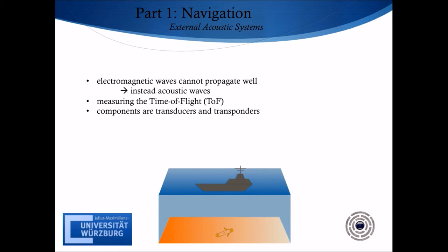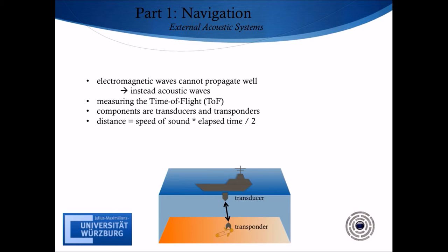Basic components of external acoustic systems are transducers and transponders. An acoustic transducer that combines a transmitter and a receiver sends out an interrogation signal. The transponder receives this signal and sends it back to the transducer. The distance to the transponder can be calculated using the equation: distance equals speed of sound multiplied by elapsed time divided by 2. The division by 2 is because the measurement covers time in two directions, from the transducer to the transponder and back. Note that in this calculation we assume for simplicity that there is no change of the vehicle's position while the acoustic wave is propagating.